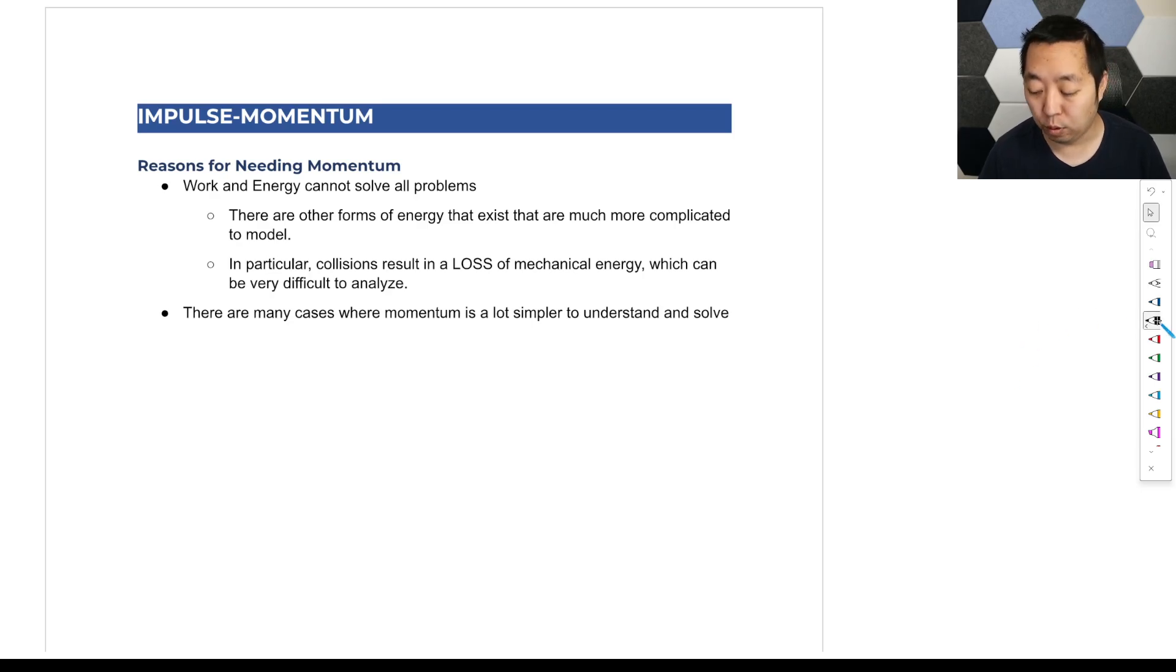All right, so now we're going to start unit four, which is the impulse momentum unit. And let me explain why we need it. So we've learned kinematics, we've learned forces, we've learned work and energy, and we can solve a lot of problems. But work and energy cannot solve all problems.